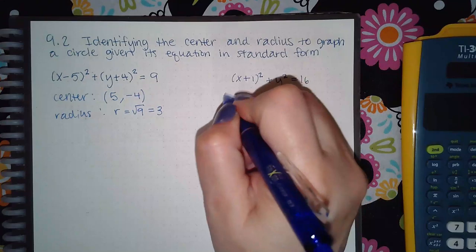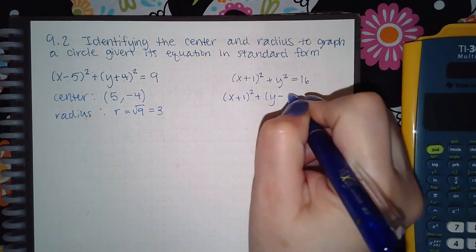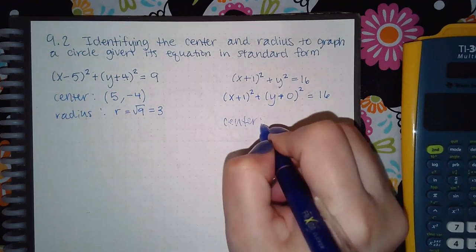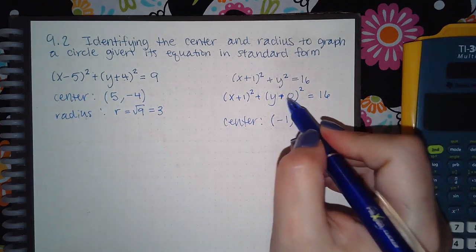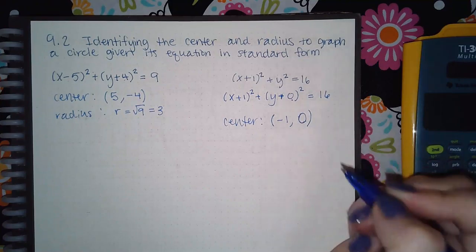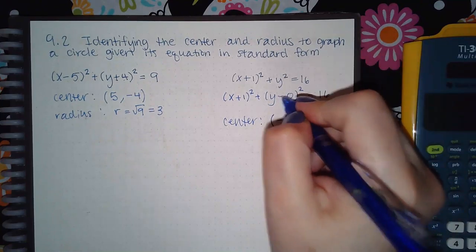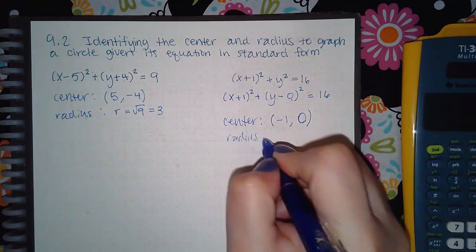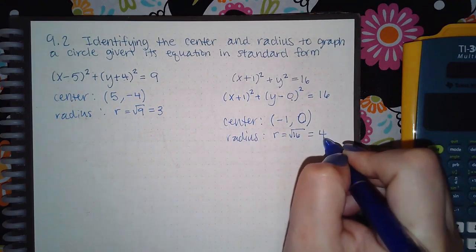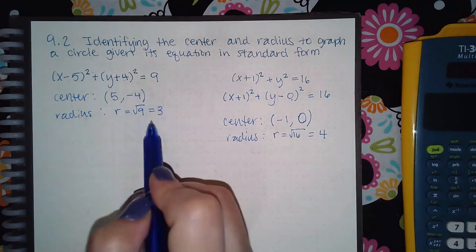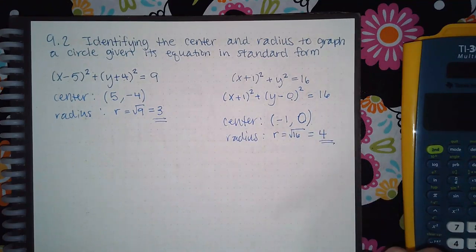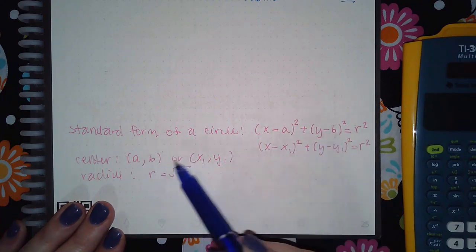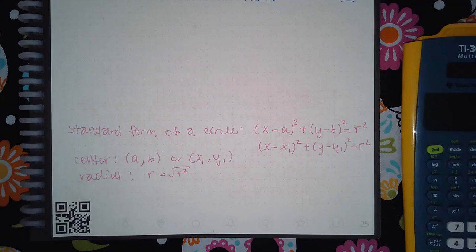For the next problem, it might help to rewrite the y-term as y minus 0 — it really doesn't matter because 0 is neutral. When I go to find the center, I get the opposite of the x-term, which is negative 1, and the opposite of plus 0 is negative 0, but there's no such thing as negative 0 — it's just 0. The radius is the square root of 16, which is 4. All they're asking you to identify is the center and the radius. You can't do it unless you recognize you're taking the opposite sign of what's inside the parentheses, and for the radius you're taking the square root of whatever number is on the right-hand side.